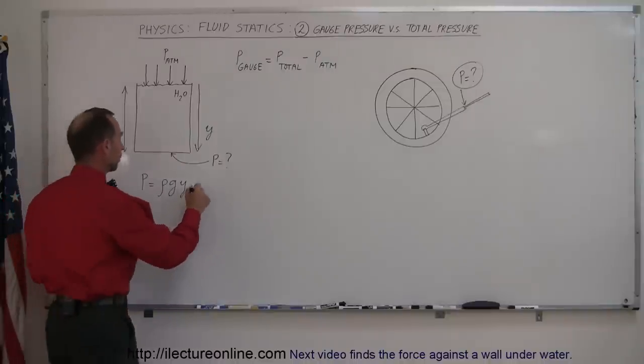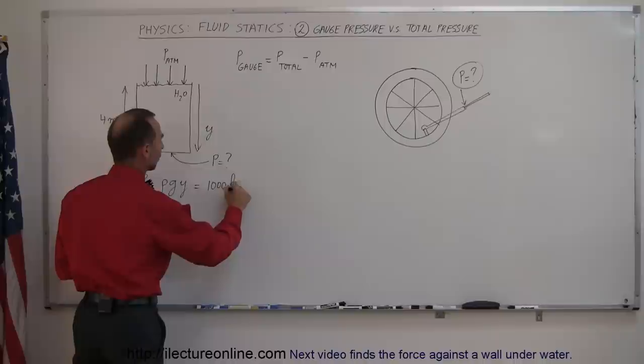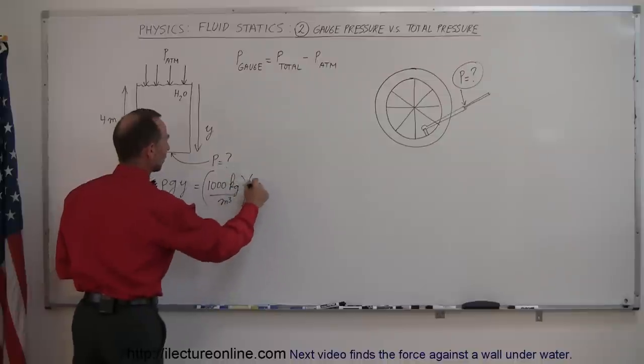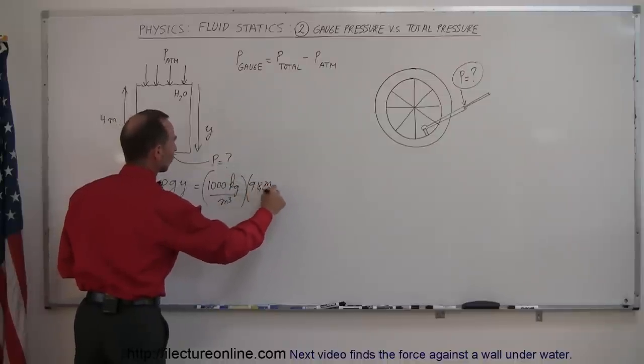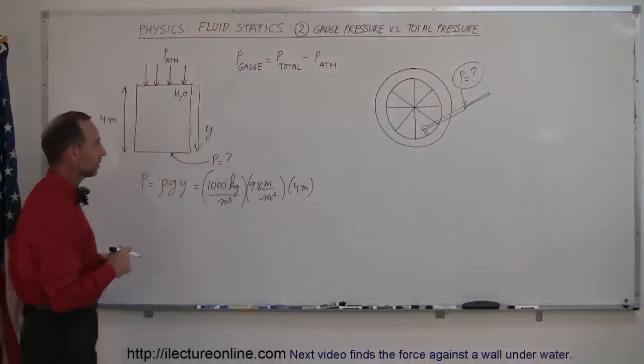Plug in the values, we get the density to be 1,000 kilograms per cubic meter. g is 9.8 meters per second squared, and y then would be 4 meters.